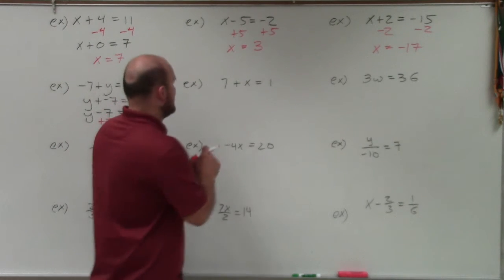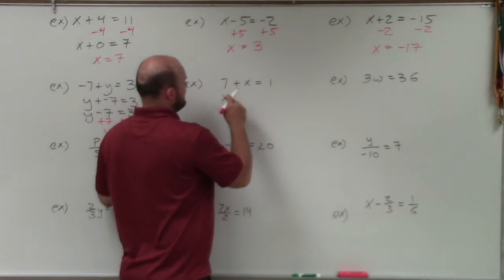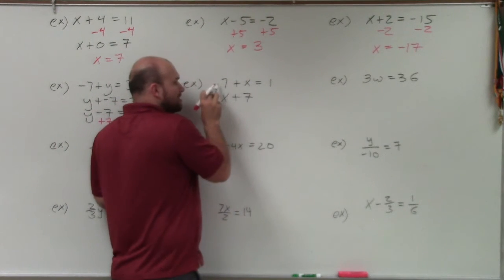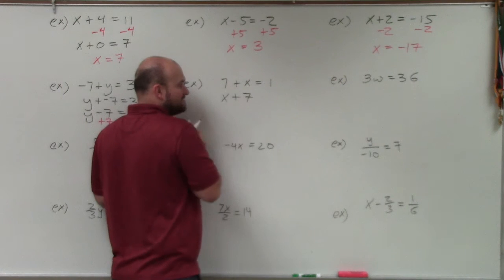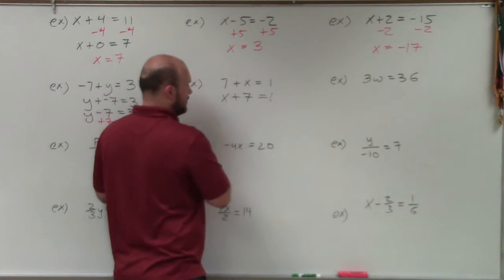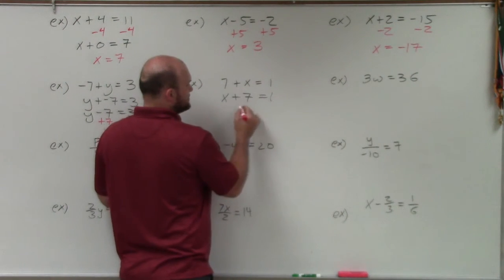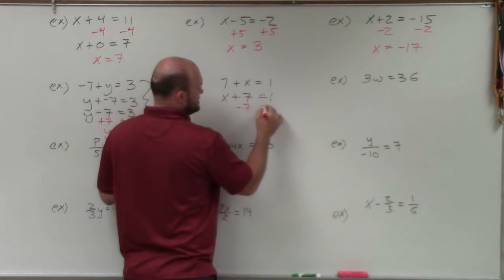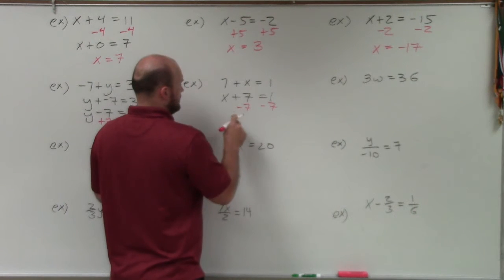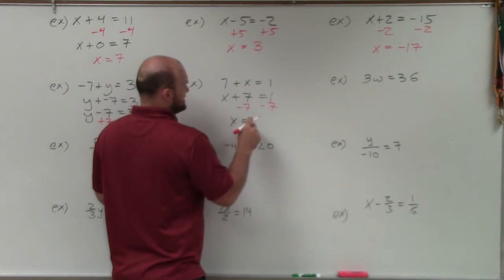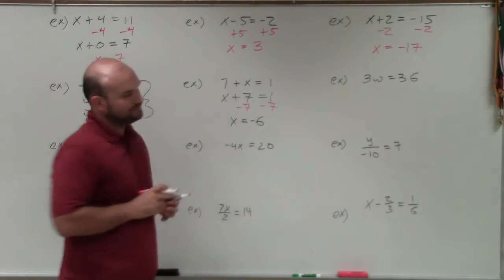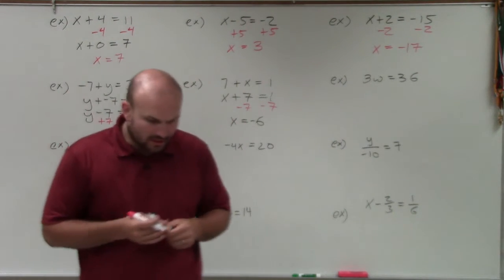Over here, if I rewrite this, I have x plus 7 — notice that's a positive 7 — equals 1. So to solve, I subtract 7 on both sides, and I get x equals negative 6.